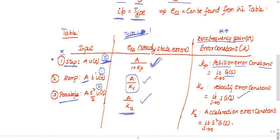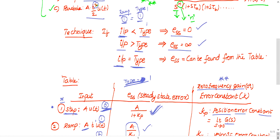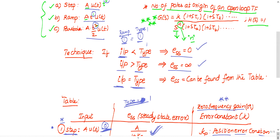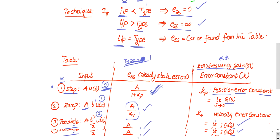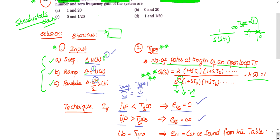To summarize the method: for any question on steady state errors, first calculate input (power of t: step=0, ramp=1, parabola=2) and type (number of poles at origin). If input < type → SSE = 0; if input > type → SSE = infinity; if input = type → find SSE from the table.